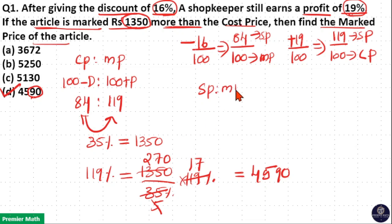Here sell price and marked price ratio is equal to 84 to 100. Same way, I need to cancel sell price. So I write sell price here. So cost price and sell price ratio is 100 to 119.